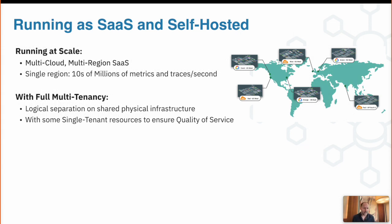We run this as SaaS — we are multi-cloud and multi-region. A single SaaS region monitors tens of thousands of hosts, generating tens of millions of metrics per second and multiple millions of trace records per second. So we are able to take huge volumes of high-quality data and process them at high speed. That quality and context of data allows us to do a level of analytics which none of our competitors is able to do, and it allows us to alert as quickly as possible.